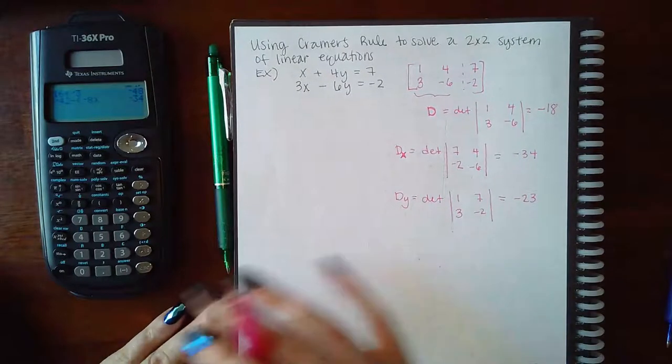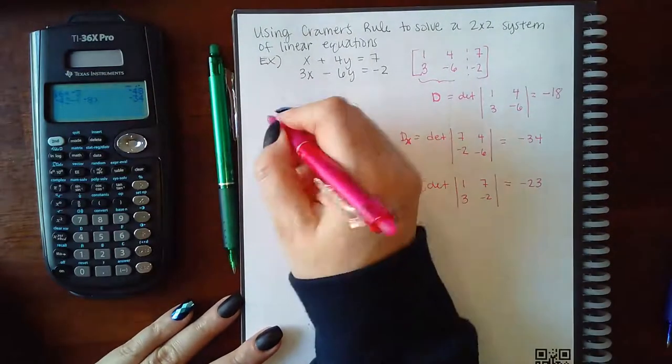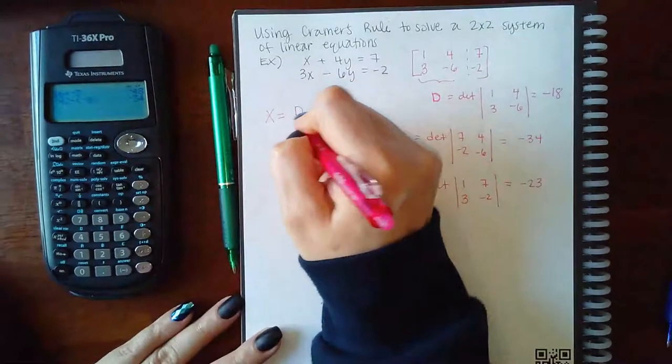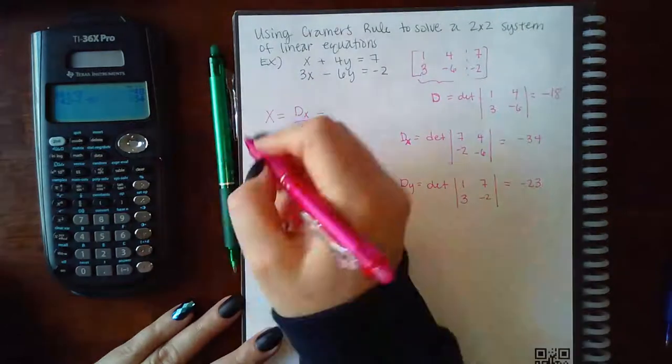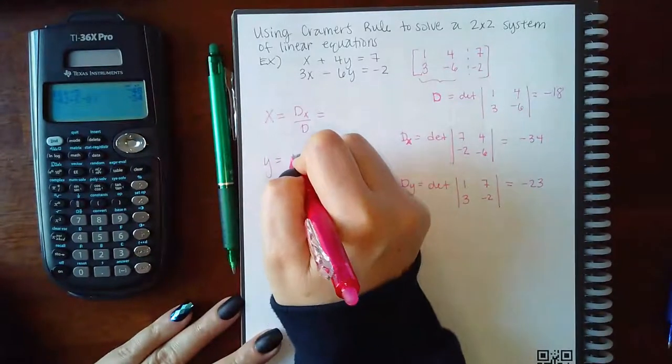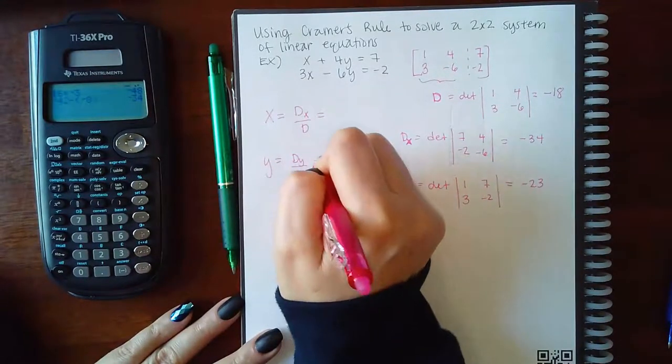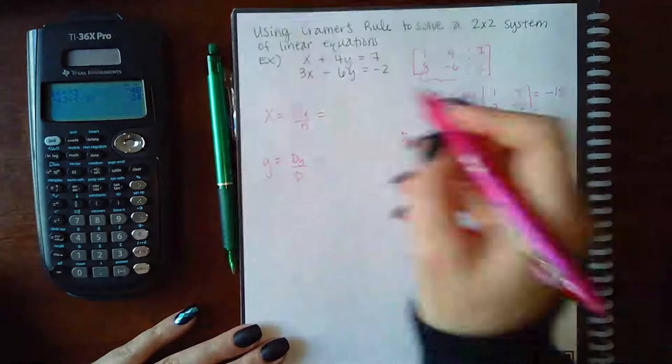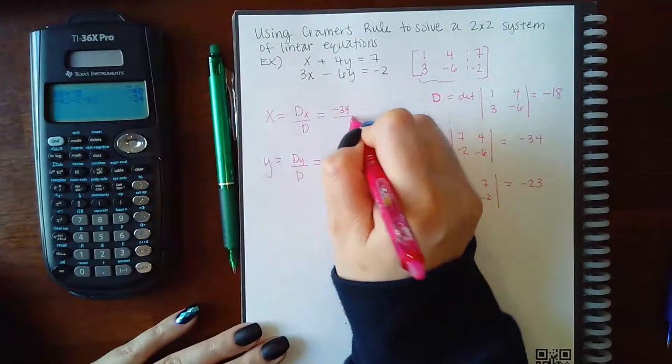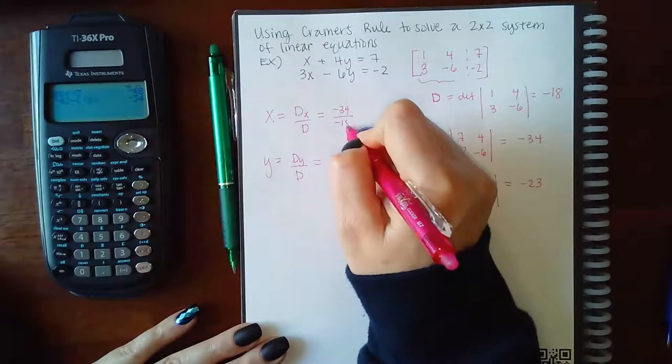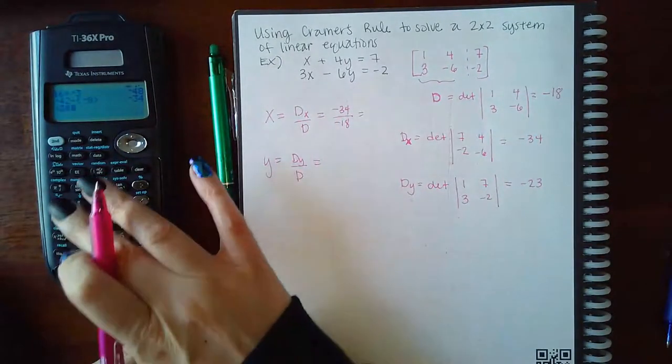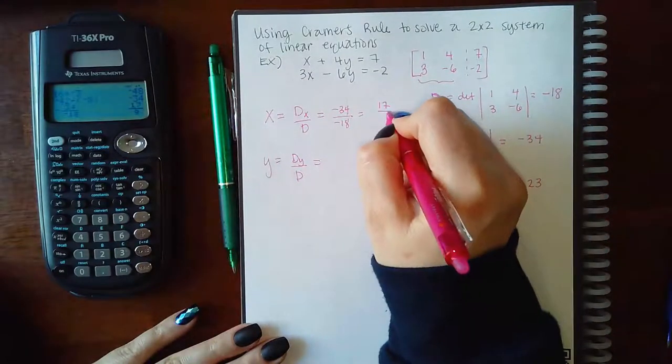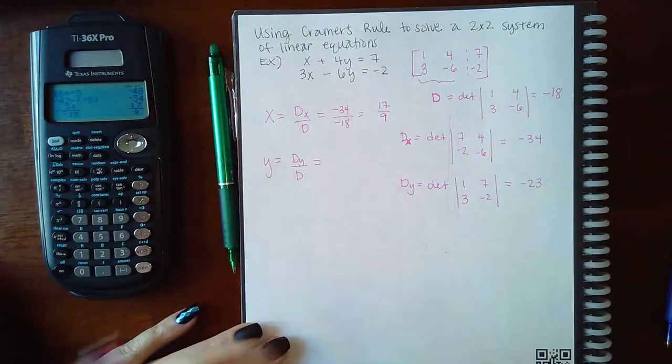And what Kramer's rule tells us is that the variable X is equivalent to DX over D, and the variable Y is equivalent to DY over D. So DX is negative 34, D is negative 18.